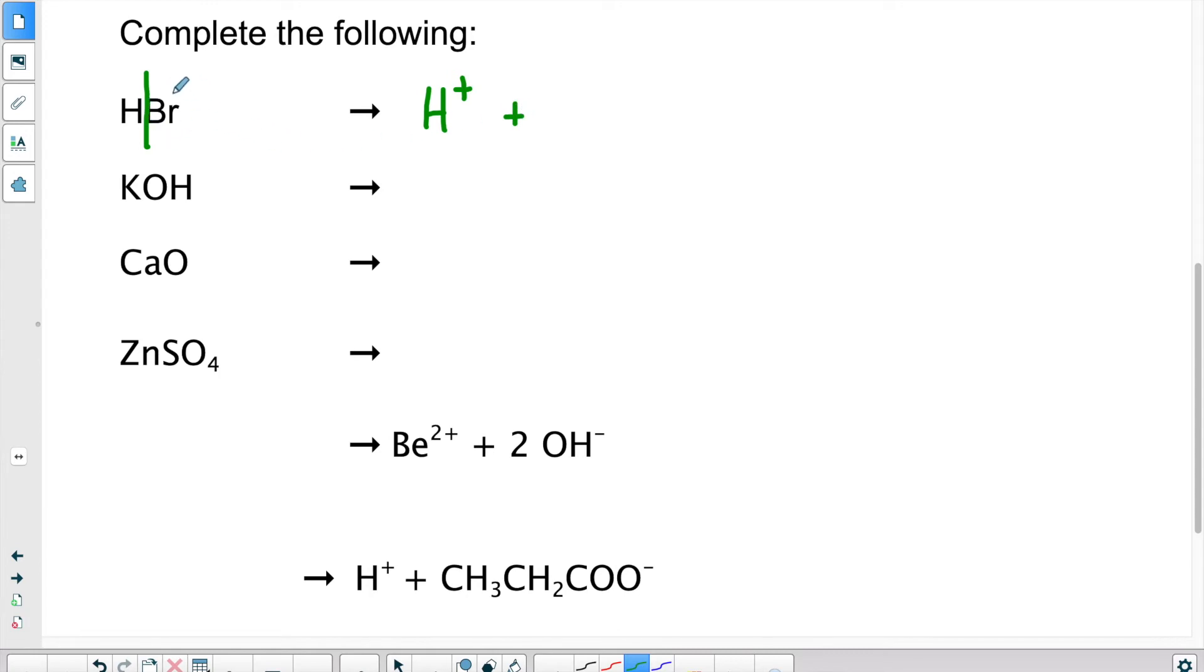And what are we left with? We're left with the counterpart, which is Br. Now, if you look in the periodic table, Br is in group seven. So that means it will have a charge of minus one.